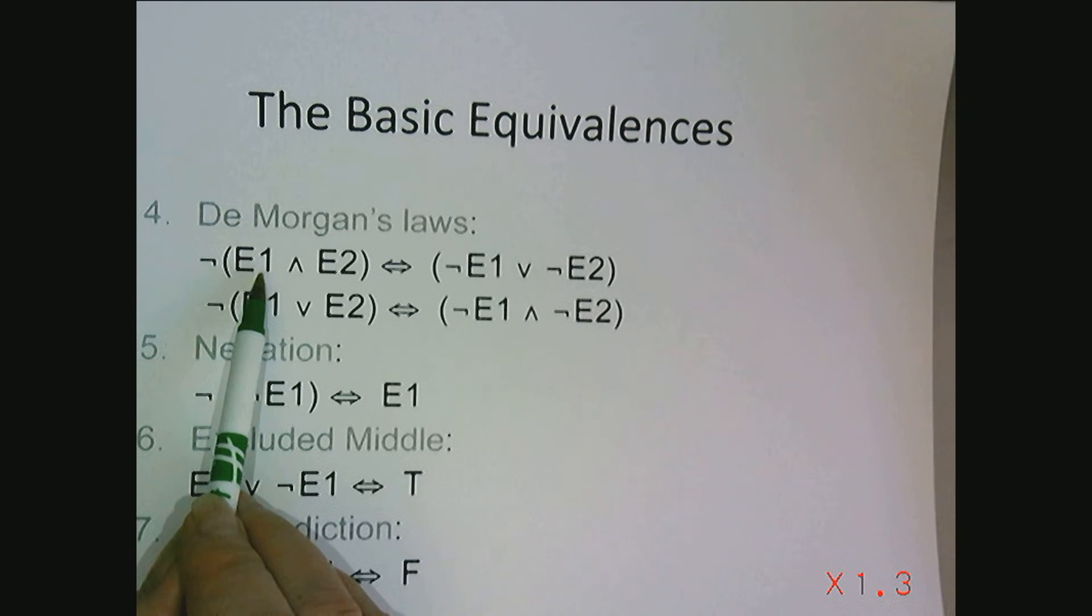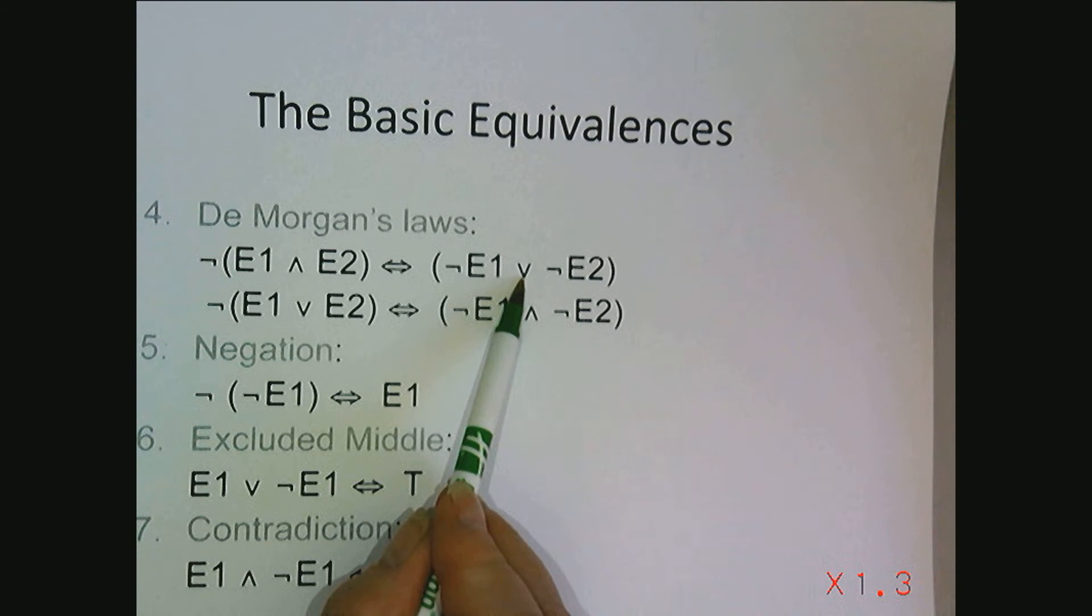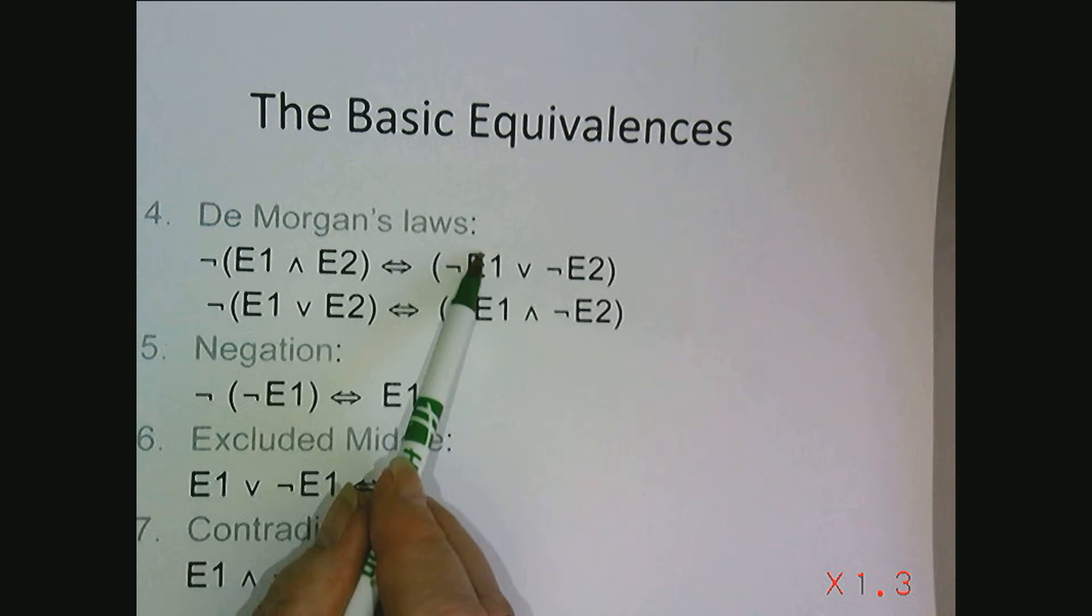So if we're taking the negation, what we need to do is negate both components and ands turn to ors, ors become ands. That's De Morgan's Law.